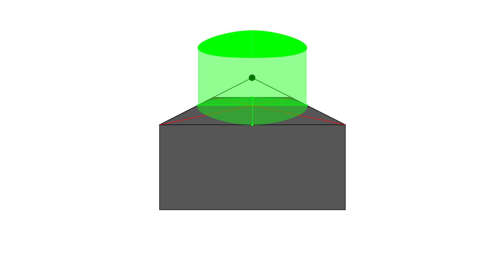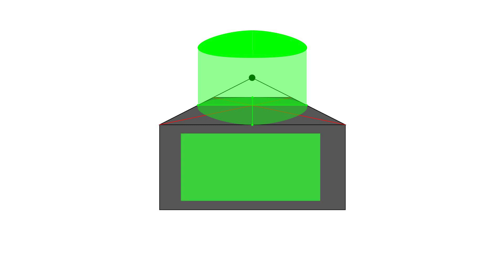Now we're going to subtract a cube from this cube. To begin, we have to draw a rectangle on the front face — just consider it as a road, so these two lines should go through the vanishing point. How deep is it? Well, that's up to you. Then it's time to draw the vertical and horizontal lines and remove the extra ones.